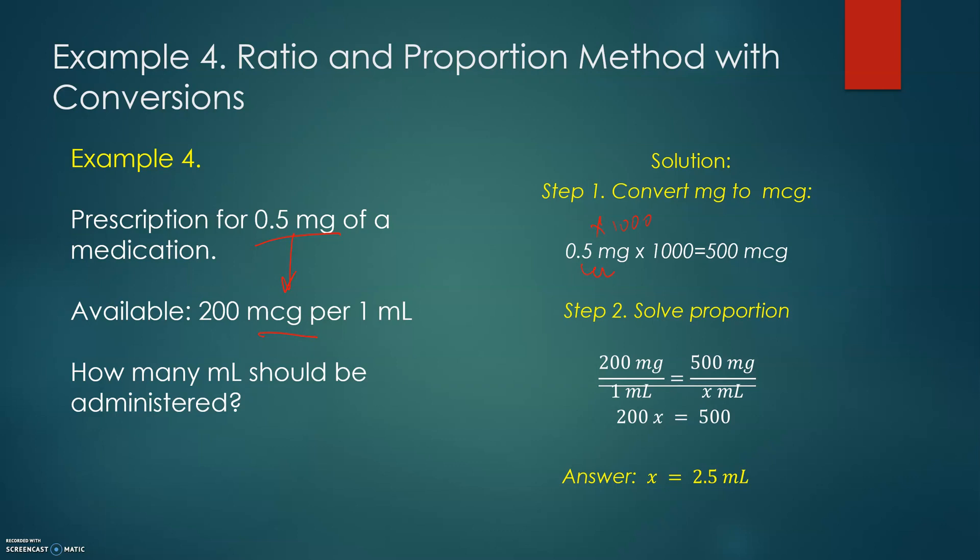Step 2: Solve proportion. We have 200 mg over 1 mL equals 500 mg over x mL. After cross multiplication, you see 200x equals 500. If you divide both sides by 200, then you will observe that we can cross out two zeros, and 5 divided by 2 will be 2.5 mL.